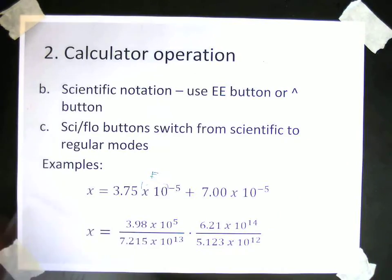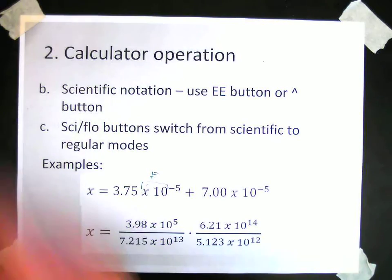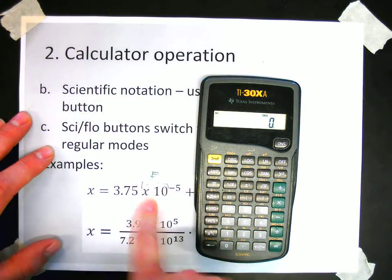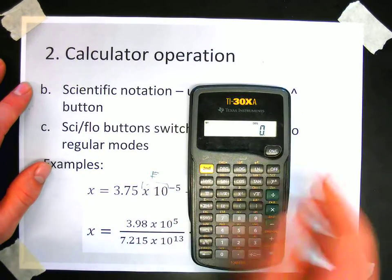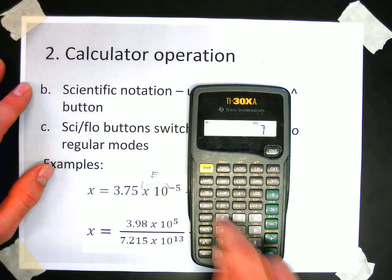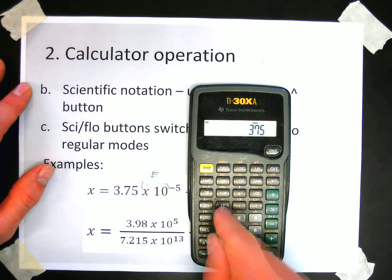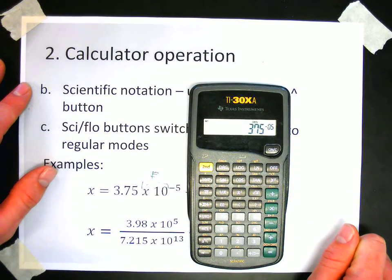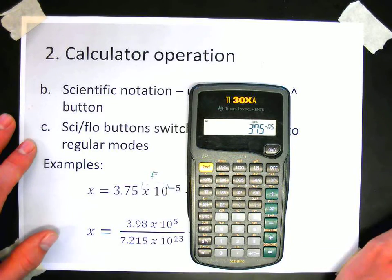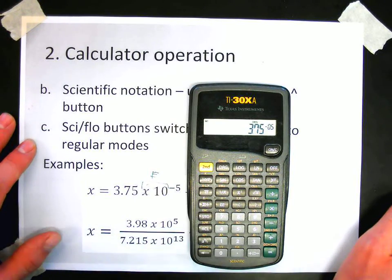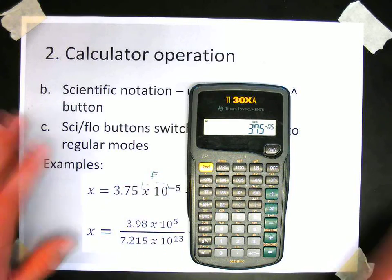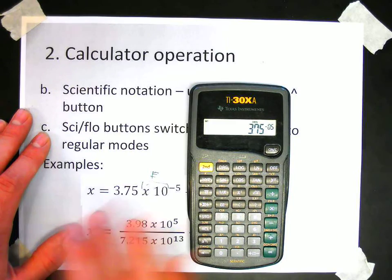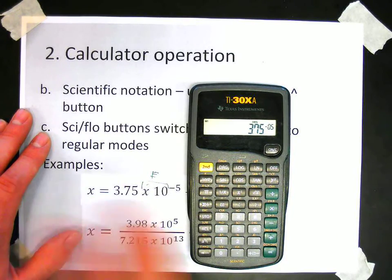Let's look at how to plug numbers in using scientific notation. So let's start with just putting this number in 3.75 times 10 to the negative 5th. So to put that in, on this calculator, it would be 3.75 E to the 5 negative. So the E button is the easiest way to put that in. And the E button, it includes the times 10.